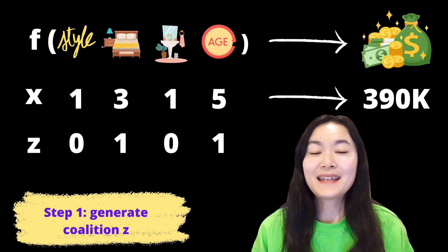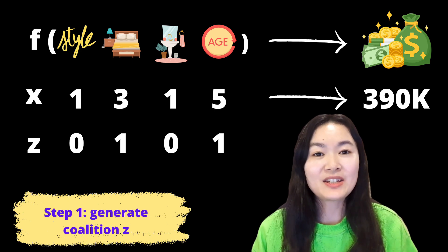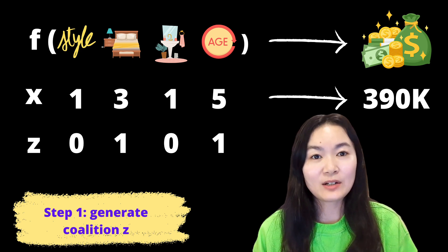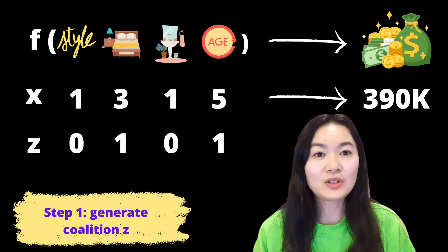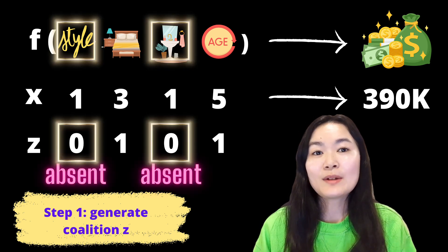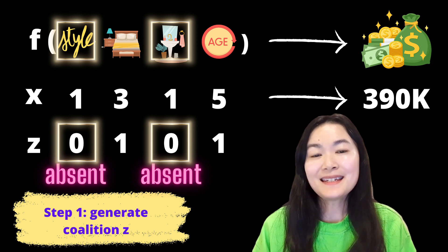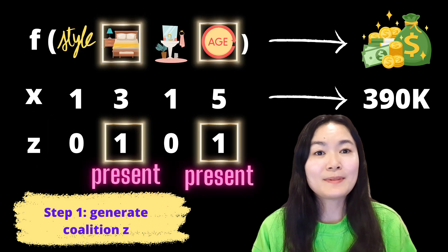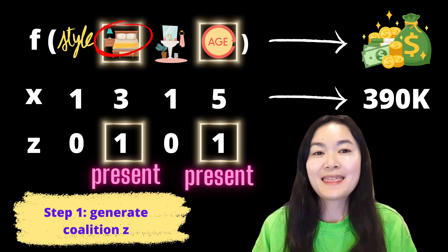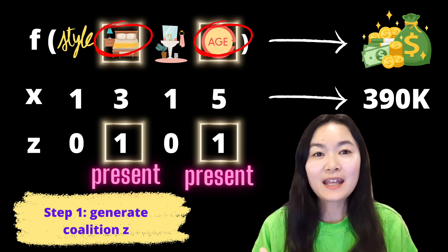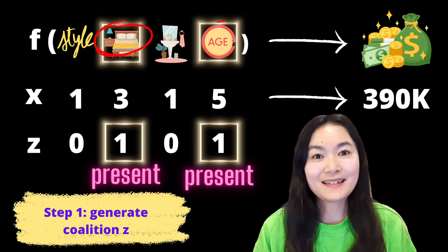Step 1 is to generate a coalition Z. We randomly generate 0 or 1 for each feature, with 0 representing the feature being absent and 1 representing the feature being present. So in this case, only the number of bedrooms and the age features are present.